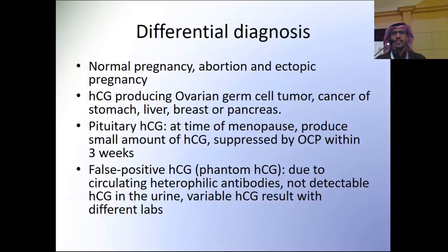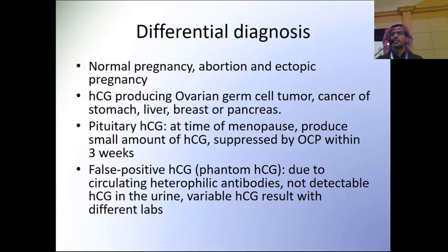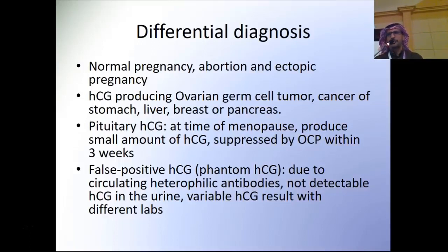Another differential is pituitary beta-HCG, which occurs at the time of menopause — either natural or post-surgical — because the luteinizing hormone peak produces a small amount of beta-HCG, usually between 20 to 40. This can be confirmed by using oral contraceptives for three weeks; if there is suppression of beta-HCG, the source is pituitary beta-HCG. False positive beta-HCG, called phantom beta-HCG, is due to circulating heterophilic antibodies — large molecules that mimic beta-HCG in serum. This can be diagnosed because beta-HCG will not be detected in urine and results are variable across different labs.